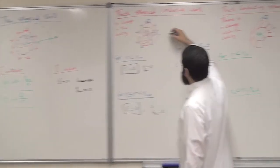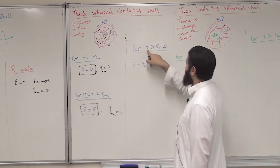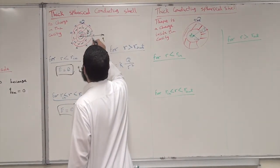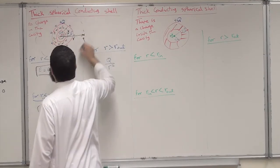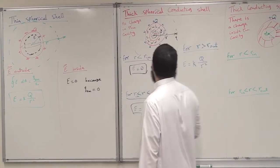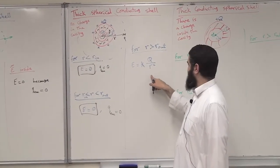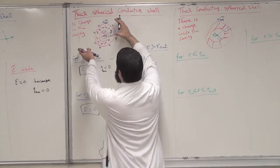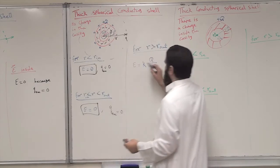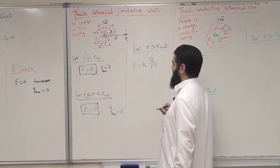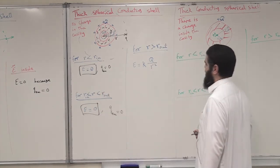If we would like to find the electric field outside, at point P where r is greater than r_out, the result will be the same as the previous cases: the electric field equals kQ over r squared. This is the logical result from the shell theorem — all charges in the spherical symmetry act as if located at the center. So all of the plus Q is located at the center, and the electric field seen from outside is k times the total charge divided by r squared. The direction is radially outward if Q is positive, radially inward if the charge is negative.